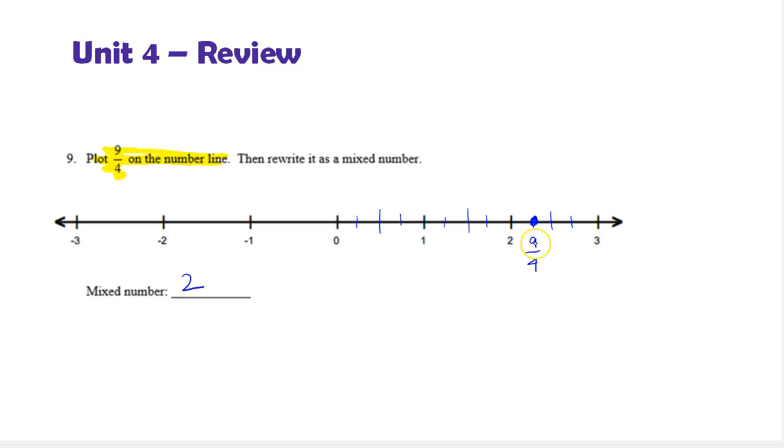Then we write a proper fraction that shows how much bigger 9 fourths is than 2, which is 1 fourth. So as a mixed number, this is 2 and 1 fourth.